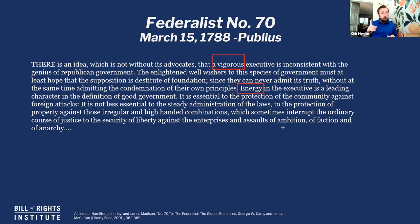What Publius is saying is: we want to protect liberty — that's the number one thing in a Republican government. In order to do that, at times we need somebody who can act vigorously — energetically — in a way that is consistent with making a quick, direct, and clear decision where someone is clearly in charge. That's what the role of the executive is, according to Publius' argument.